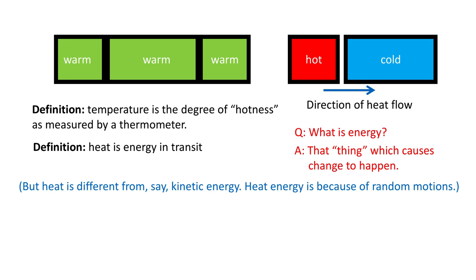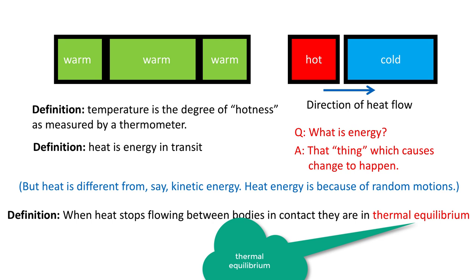Here's a definition of thermal equilibrium: when heat stops flowing between bodies in contact, we say that those bodies are in thermal equilibrium. How long it takes for a hot body to communicate its heat to a cold body, thermodynamics has nothing to say about that. It cannot tell you the rate, but it does tell you that when they are in thermal equilibrium no heat flows from one to the other.